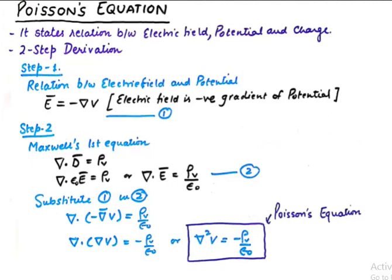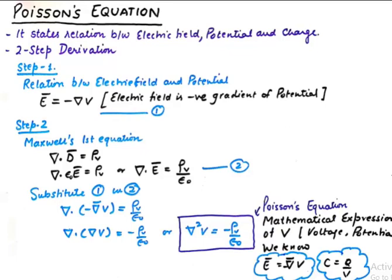So this is Poisson's equation and it is a mathematical representation or mathematical expression of voltage potential. We know that voltage is related to electric field intensity as stated in equation number 1 and also voltage is related to capacitance as q upon v. So if we are able to mathematically calculate voltage from this operator and this relation we can also calculate E and C. This equation is a mathematical tool which is useful in calculation of voltages, electric field intensities and capacitors.